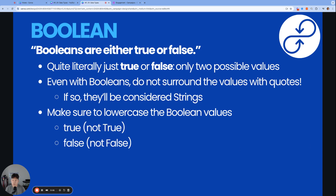The last data type is a Boolean. Booleans are either true or false — a very technical term that sounds funny, but it's literally just true or false, and those are the only two values a boolean variable can have. Make sure not to surround the values true or false with quotes, because then they'll be considered strings. Also make sure to lowercase the boolean values: true with a lowercase t, not capital T, and false with a lowercase f, not capital F. Otherwise Liquid will not work properly.